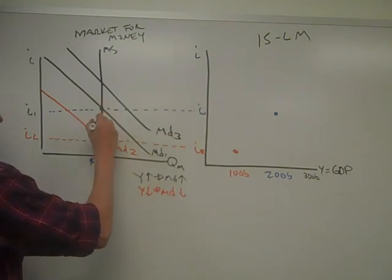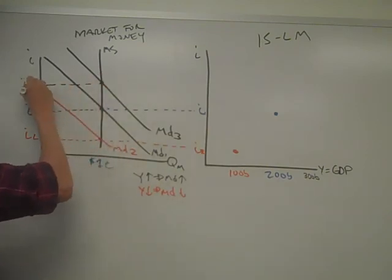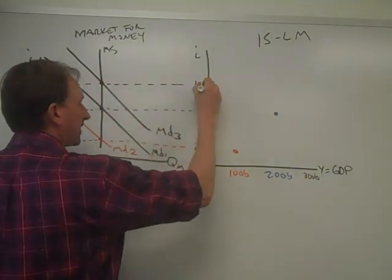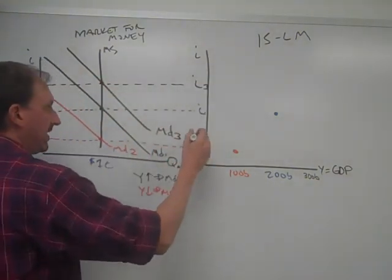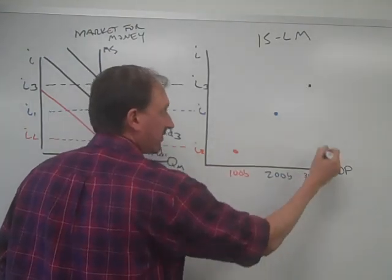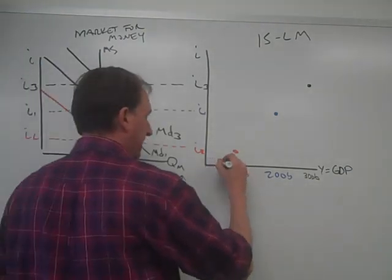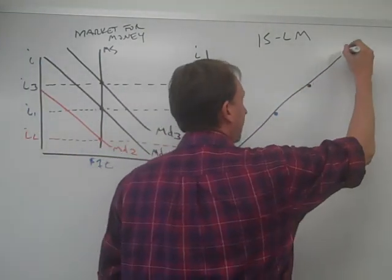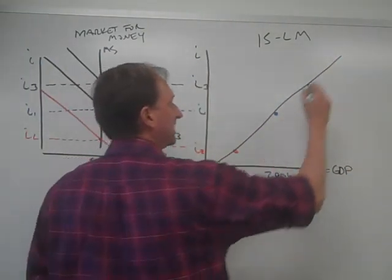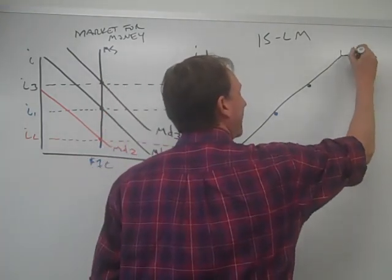So now, instead of moving from here to here, we're going to move from this point to this point. And that's going to be I3. And let's carry that across to here and call that I3. And then this point is right there because it corresponds from $300 billion and I3. And then we have our three data points. And we can connect those data points. That should be a straight line. Use your imagination there. And that's the LM curve. It's a positive slope curve.